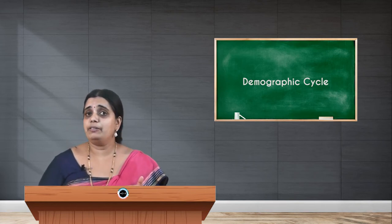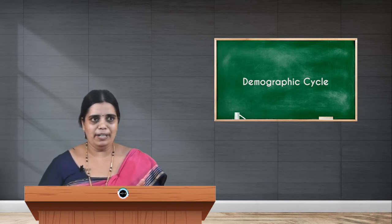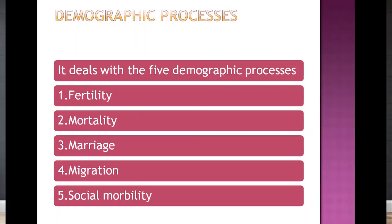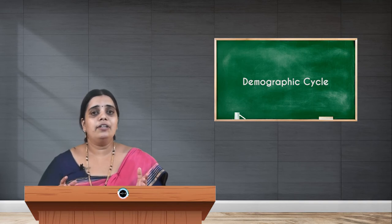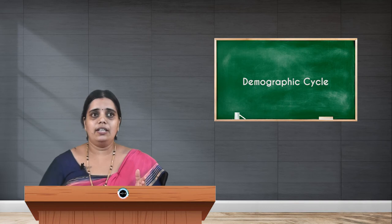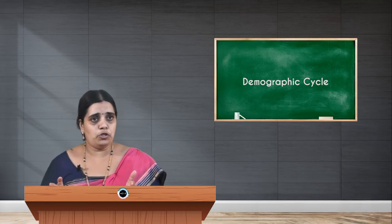After knowing the elements of demography, we will get into the demographic process. This demographic process contains five important elements: first is fertility, second is mortality, third is marriage, fourth is migration, and lastly, social morbidity. If any of these components change, the demographic will automatically be changed in terms of its distribution or other elements.